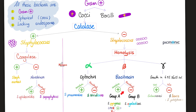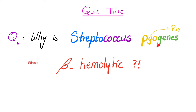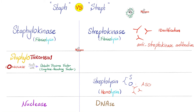Streptococcus pyogenes, also known as Group A beta-hemolytic strep, is beta-hemolytic because it causes complete hemolysis on blood agar. Streptococcus because it is arranged in chains. It is catalase negative but gram-positive. Why is strep pyogenes beta-hemolytic? Because it has hemolysin — a protein or enzyme that breaks down blood.